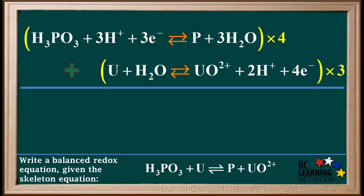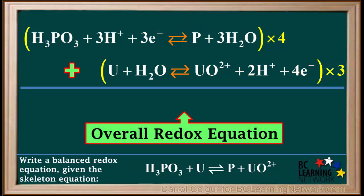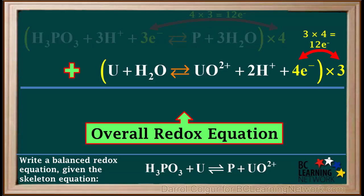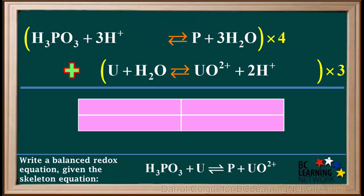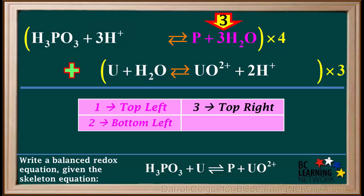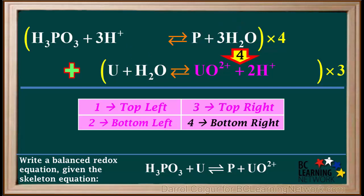What we need to do now is add these two equations to get the overall redox equation. Because we have a total of 4 times 3 equals 12 electrons on the left side, and 3 times 4 equals 12 electrons on the right side, electrons can be cancelled from both equations, like this. In order to keep everything straight, it is important to do the addition of these equations very systematically. We start by adding the substances on the top left, then those on the bottom left, followed by those on the top right, and lastly those on the bottom right.